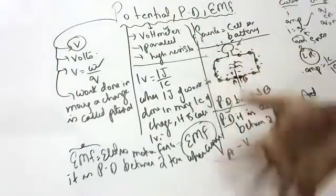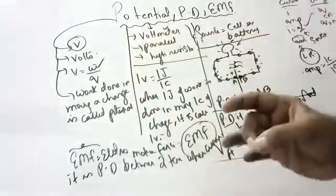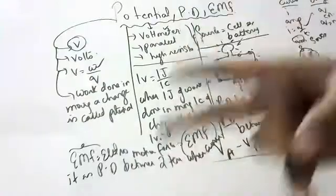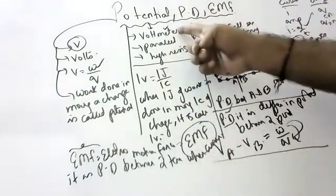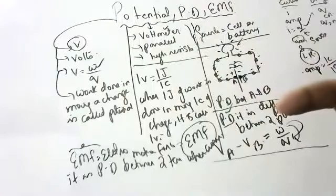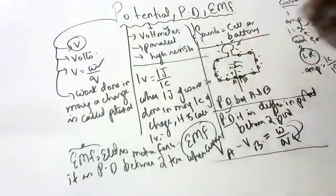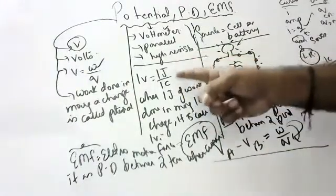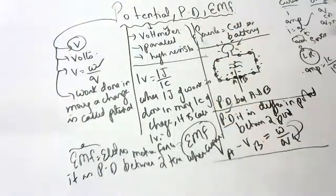Summary: Potential is denoted by V. Definition: work done in moving a charge is called potential. Formula: V = W/Q. Measured by voltmeter, which is connected in parallel because it has high resistance. Define one Volt: when one Joule of work is done in moving one Coulomb of charge, it is called one Volt. Source of potential: cell or battery.